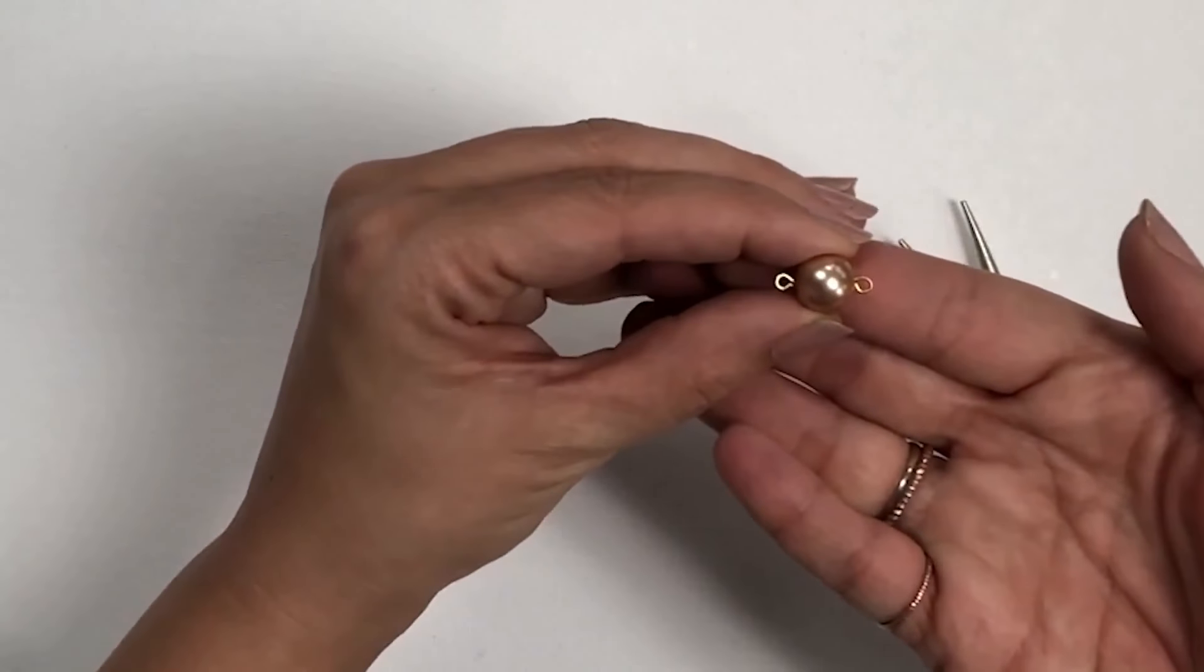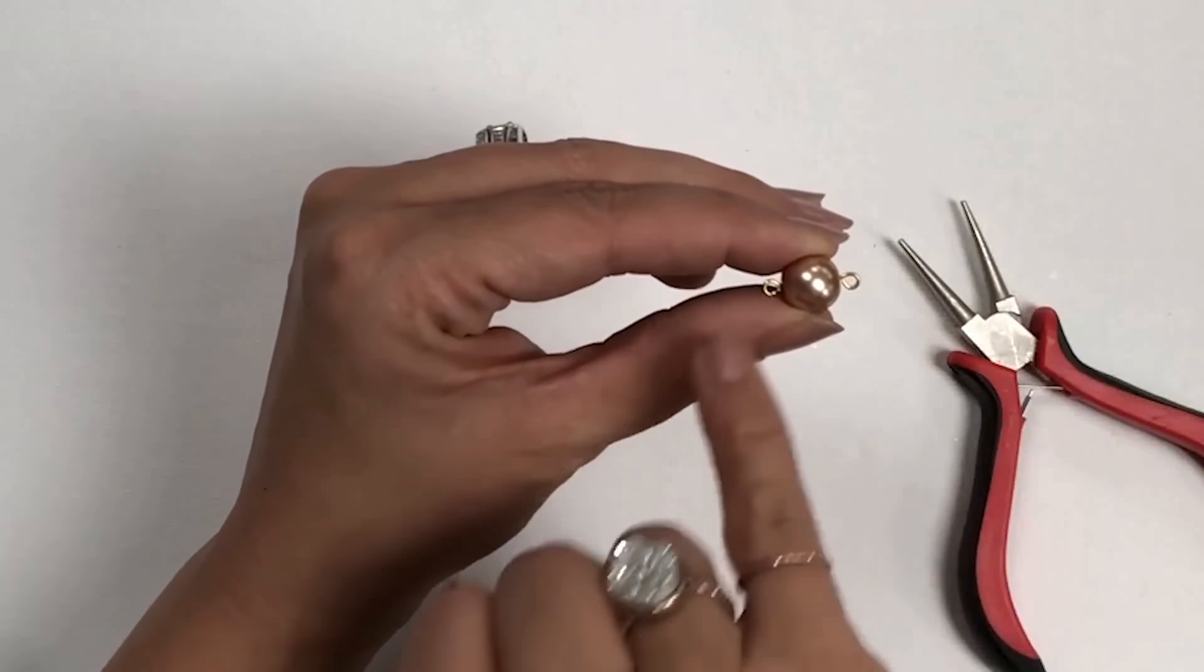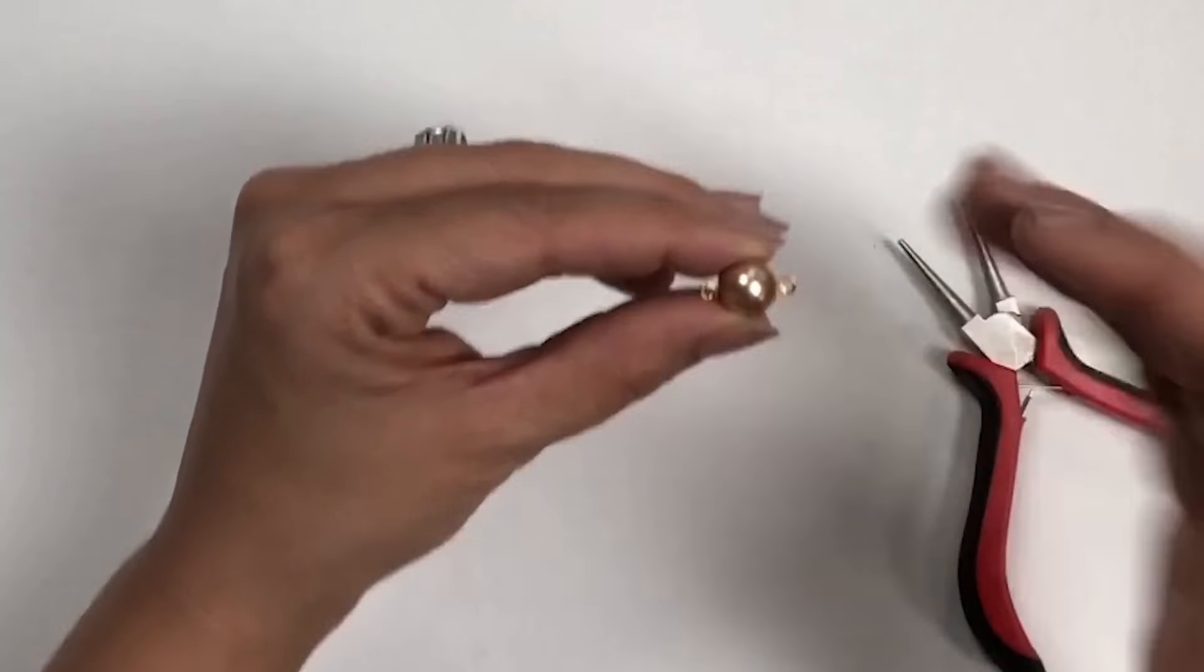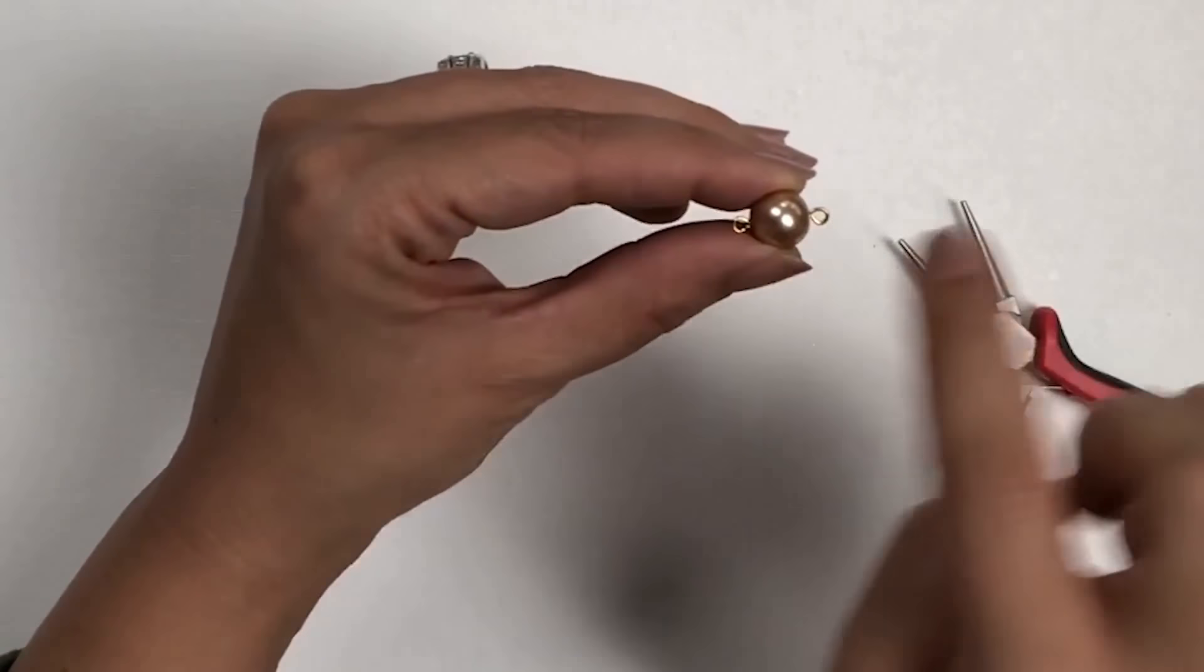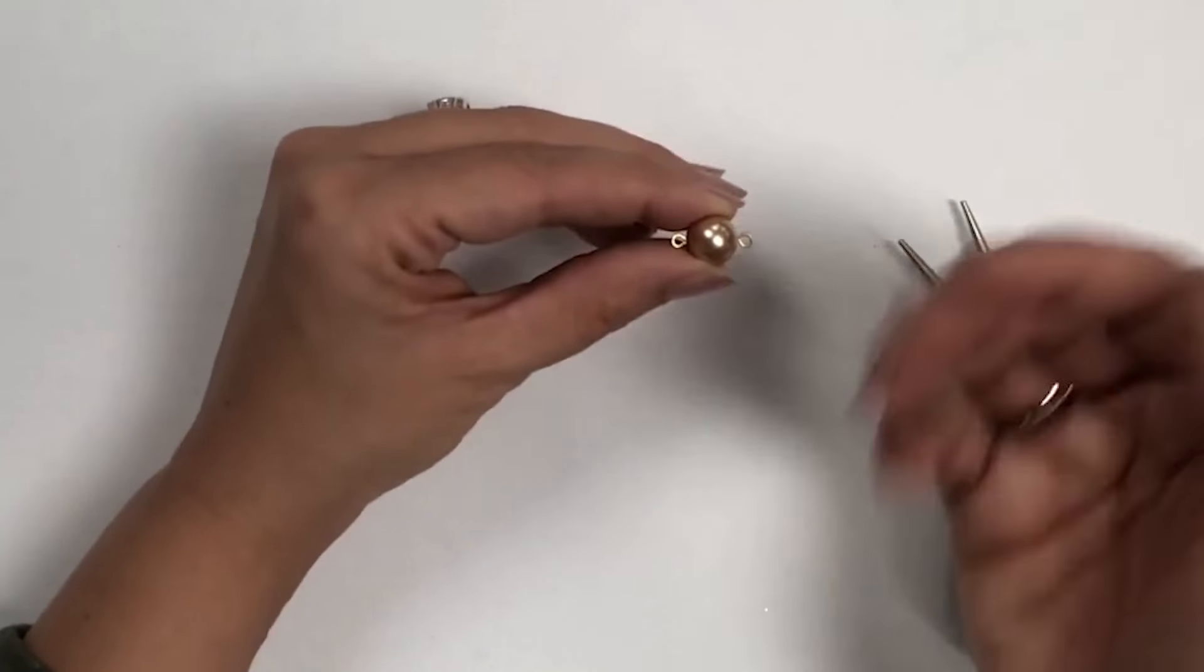You can see now there's two matching loops on each side. What you don't want is for one loop to be this direction and the other one to run this way – almost like one is horizontal and the other one's vertical. You want them to be laying the same way.